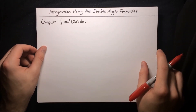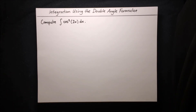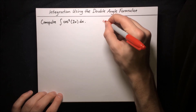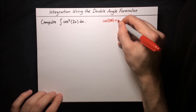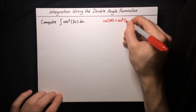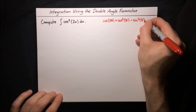Here's our final integral: we want to compute the integral of cosine squared of 2x dx. Again, this looks tricky — there's no clear way to do it with substitution, the sine double angle formula, or the cosine double angle formula directly. But again, we can rearrange the cosine double angle formula to help. Starting with cosine of 2θ equals cosine squared θ minus sine squared θ.